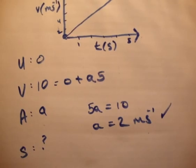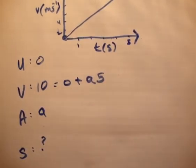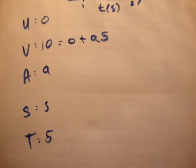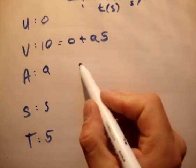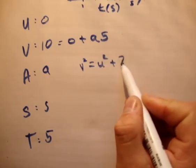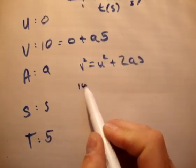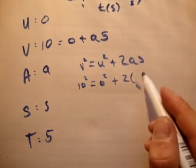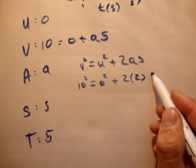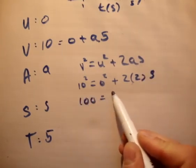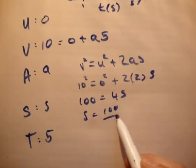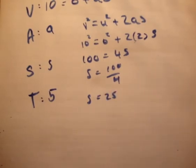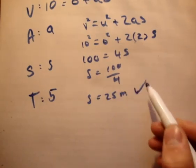Next, we're asked to find the distance covered. So let's say that the distance equals S. V squared equals U squared plus 2AS. So that means that 10 squared equals 0 squared plus 2 times the acceleration, which is now known as 2, times S. So 100 equals 4S. S equals 100 over 4. S equals 25. Is that correct? Yes, 25 meters. That's correct.